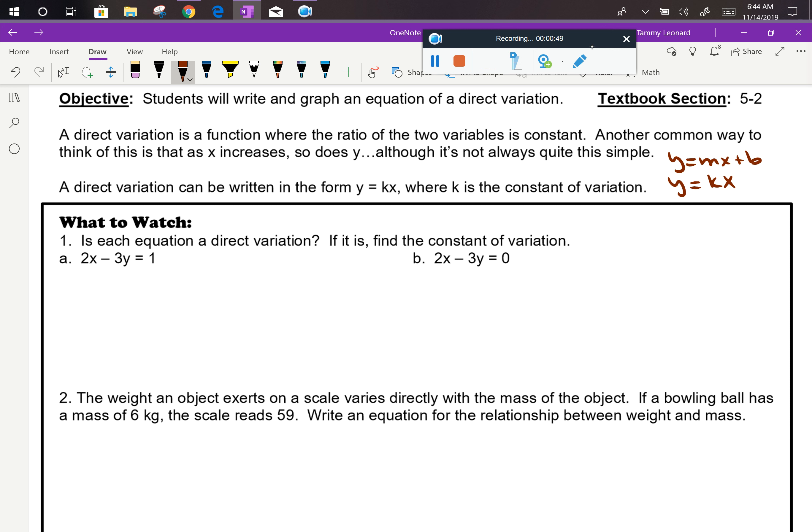We talked in the previous lesson about the fact that the only number that you can add and have nothing happen is zero. So a direct variation is a linear relationship that always passes through the origin. The y-intercept will always be zero.